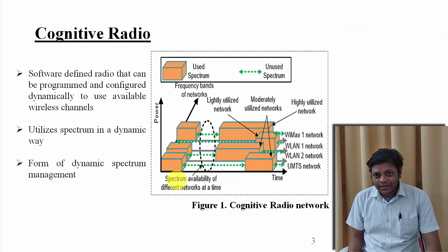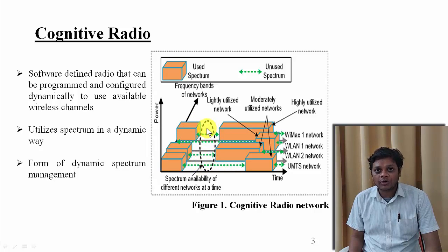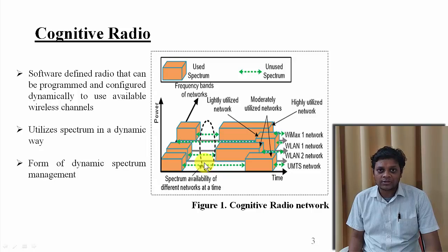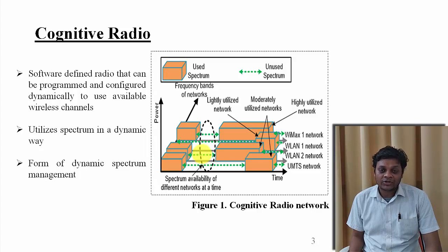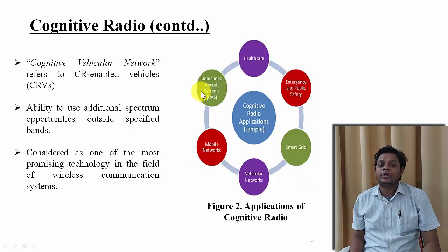In this figure you can see different frequency bands and in between these bands we have some gaps. The optimum use will be when you are using these gaps, because we are already short of frequency bands. With ever increasing number of users, in future we are going to fall short of these channels and resources. So when we implement this cognitive radio concept in a vehicular environment, it is known as cognitive vehicular network.